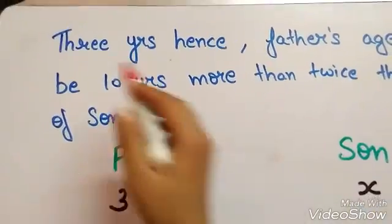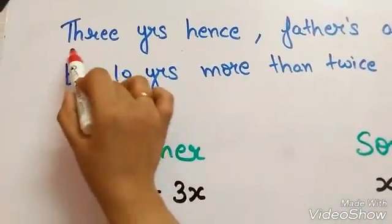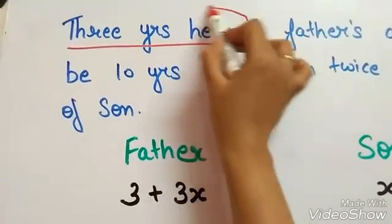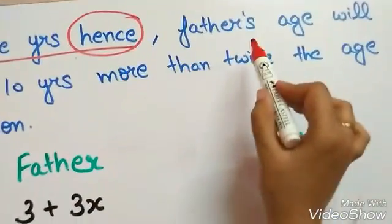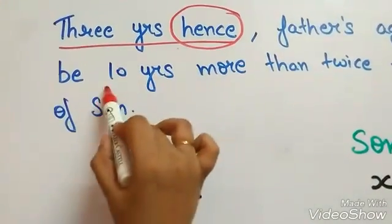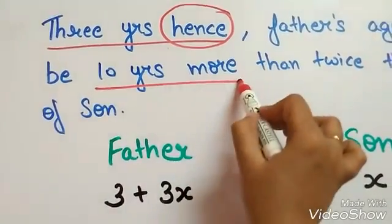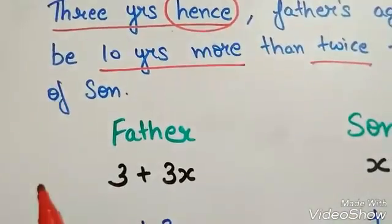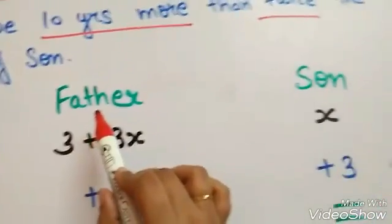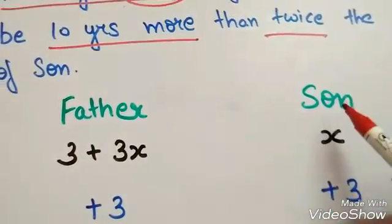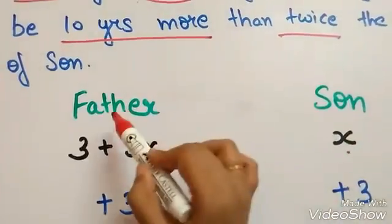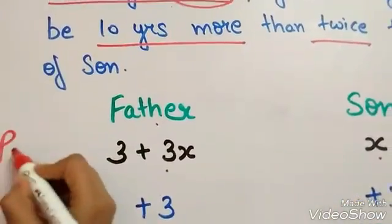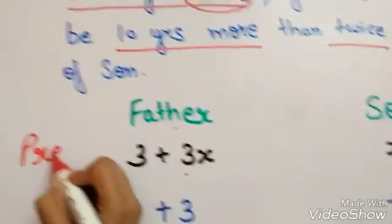Now let's see the second part of the question, which says 3 years hence. Father's age will be 10 years more than twice the age of son. As we have previously seen, age of son is x and age of father is 3 plus 3x — this is the present age.